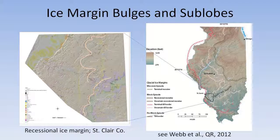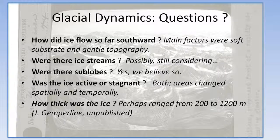Even on a county scale, we can see small bulges in the margin that are a few kilometers or so wide. A question such as why did it go so far south? Maybe because of the soft substrate and the regional topography, maybe ice streaming.